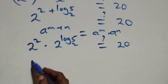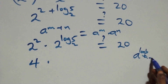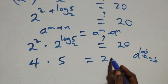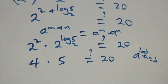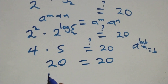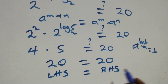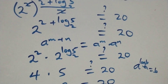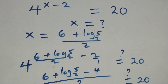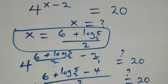2 squared gives us 4. And since a raised to power log base a of b equals b, we have 2 raised to power log base 2 of 5 equals 5. So 4 times 5 equals 20, which equals 20 on the right-hand side. Left-hand side equals right-hand side. Therefore, we conclude that x equals 6 plus log base 2 of 5, all over 2, satisfies the given problem. Thank you for watching.